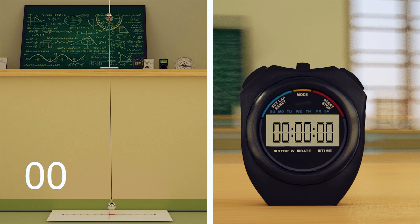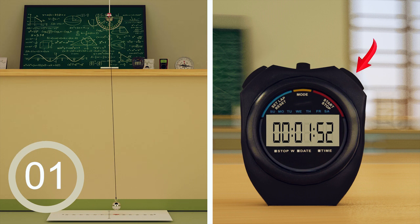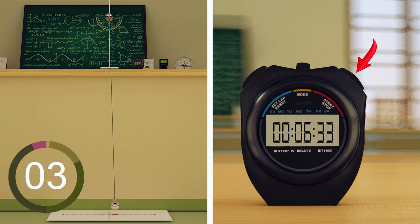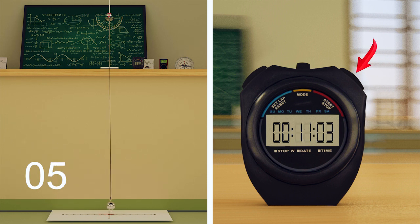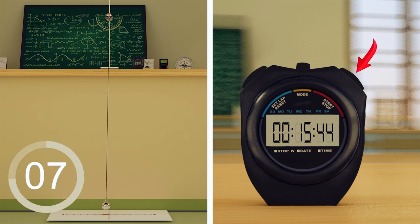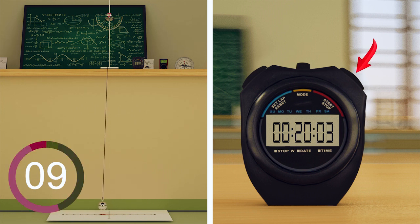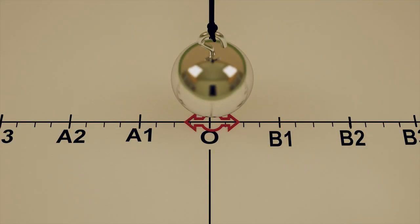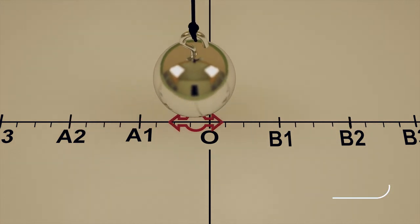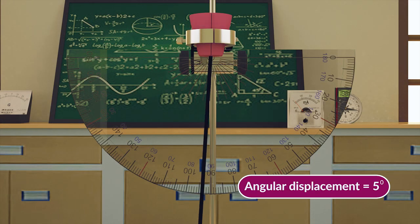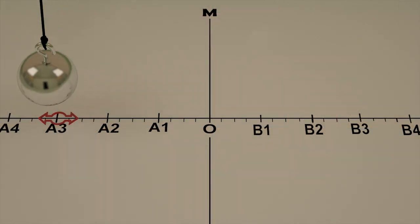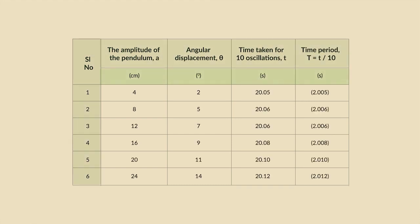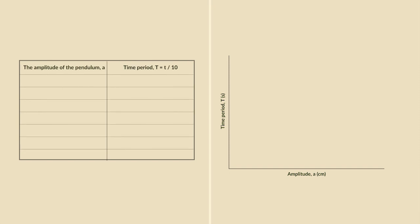Observe and record the time taken for 10 oscillations using a stopwatch. The counting of oscillations should begin when the bob passes its mean position while oscillating. Calculate the time period. Repeat for amplitudes A2, A3, A4, and A5. Record the observations. Then plot a graph between the amplitude A and the time period T, choosing appropriate scales.